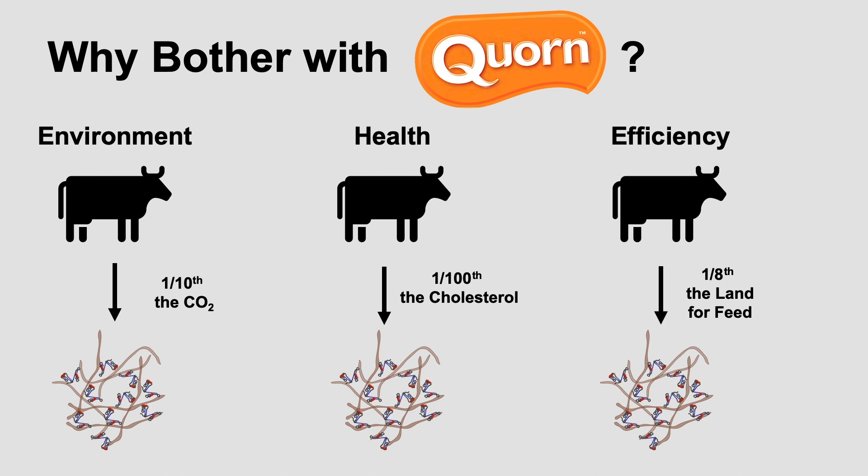And finally, the efficiency: corn takes about one-eighth the amount of land for feed compared to cows. If you grow a cow you need to feed it something — maybe grain — you would be using eight times the amount of land to create the grain for that cow compared to creating the food that the corn product eats, which is cornstarch. That leads to less fuel, less fertilizer, less water, and less time.